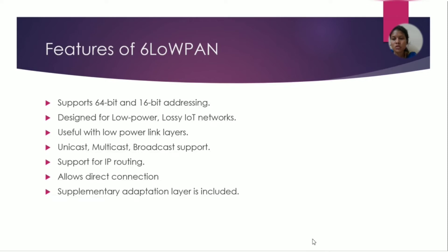Features of 6LoWPAN: it supports 64-bit and 16-bit addressing. It is designed for low-power, slow IoT networks. Useful with low-power link layers. It supports unicast, multicast, and broadcast. It supports IP routing. It allows fully direct connections. A supplementary adaptation layer is included, which allows the 6LoWPAN output features.